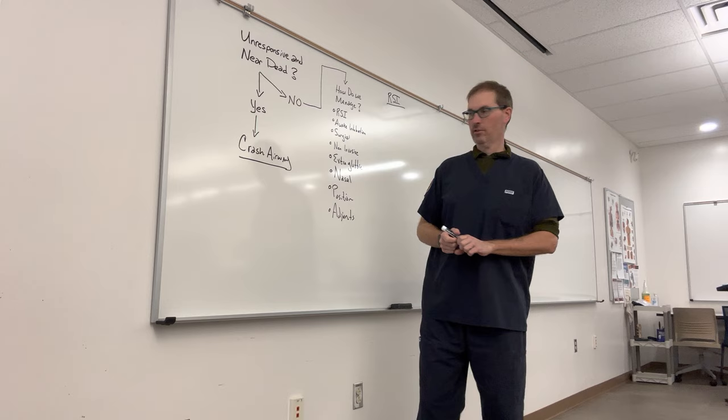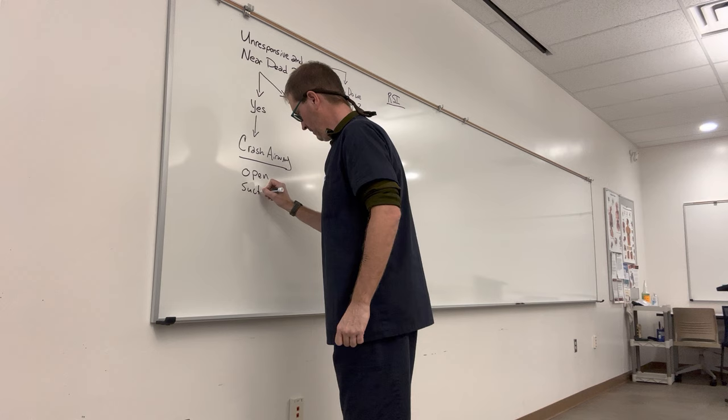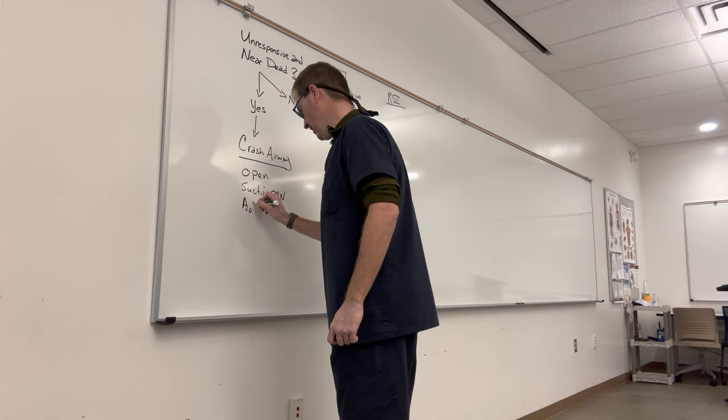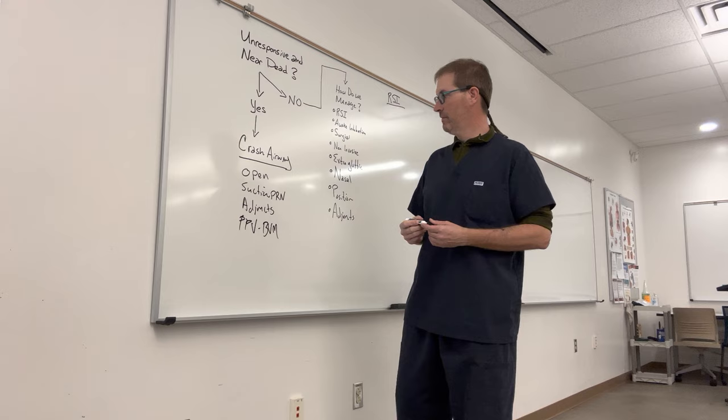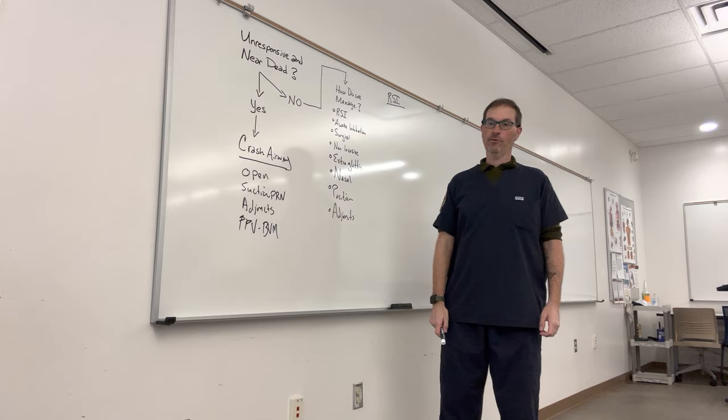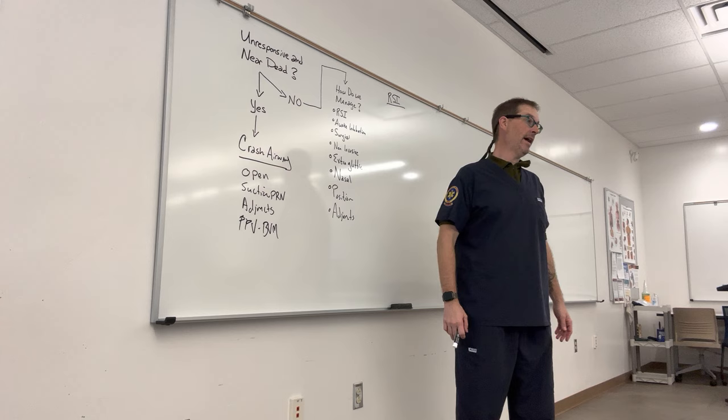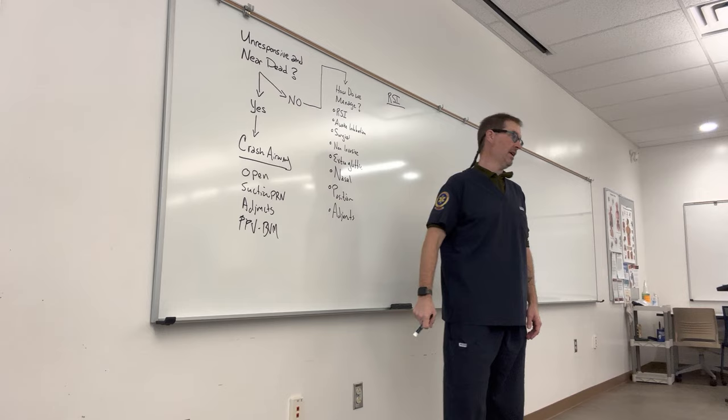Airway adjuncts. So we open the airway, suction as needed, use appropriate airway adjuncts, and ventilate them — positive pressure ventilation with a bag valve mask. These are immediate action drills if encountering a crash airway. So you pull up on scene, somebody is in cardiac arrest — that's a crash airway. You need to open the airway, suction it out if needed, get adjuncts in, and then begin ventilating them manually appropriately.